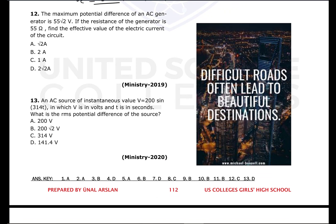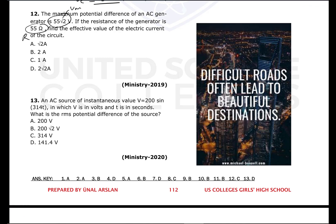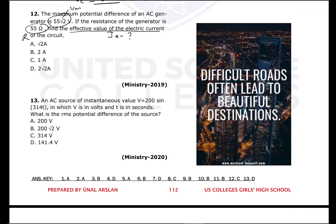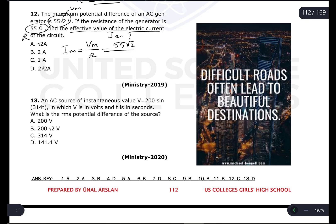Question number twelve: the maximum potential difference of an AC generator is 55√2 volts and the resistance is 55 ohms. Find the effective value of the current. Maximum current = Vm / R = 55√2 / 55 = √2 amperes. Effective current = Imax / √2 = √2 / √2 = 1 ampere is the correct answer.